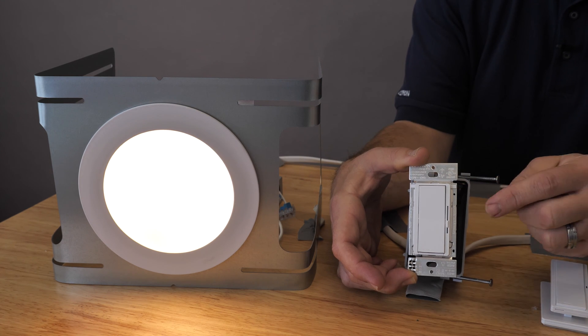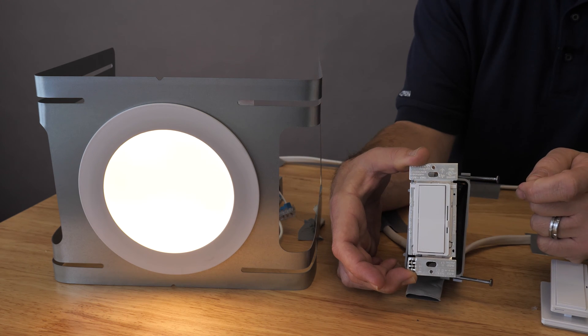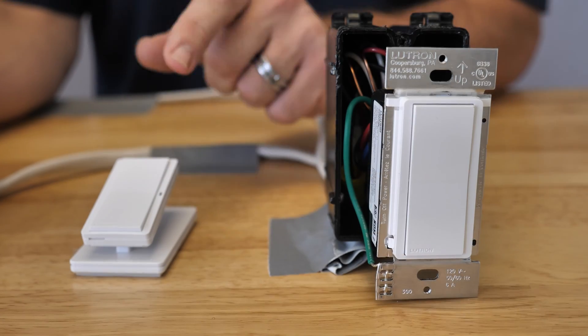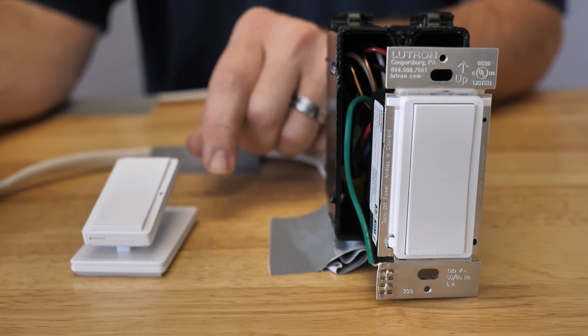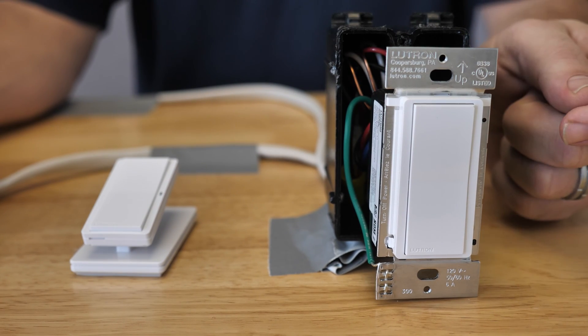That way you have a physical rendering and also an app rendering of where it's going to be. Now let's talk about accessory controls. Another great upgrade to the Diva RF system is now we have additional control devices other than just a battery operated Pico.